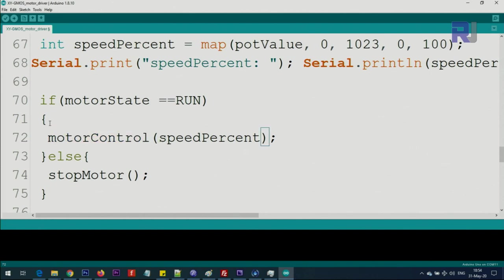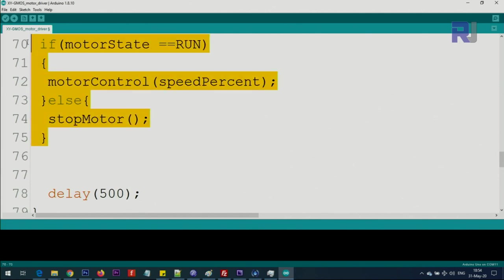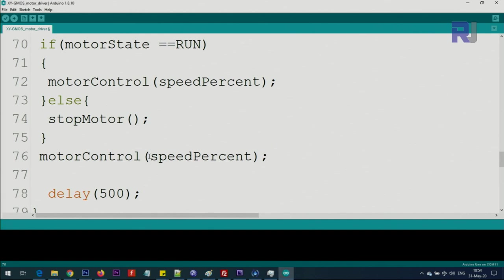Before I explain this function, you should know that if you don't want to use potentiometer you can delete this and put here some value. If you put 50 the motor will run at 50, if you put 89 the motor will be at 89 percent. Based on some other feature you can control the motor like this.